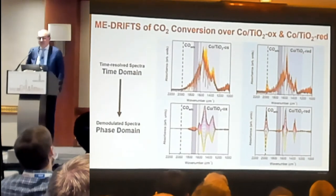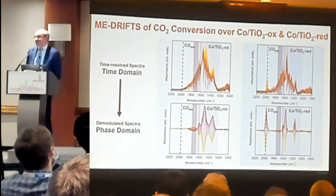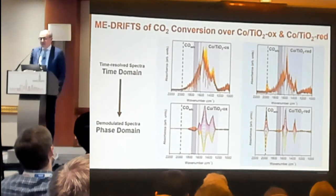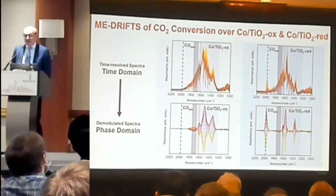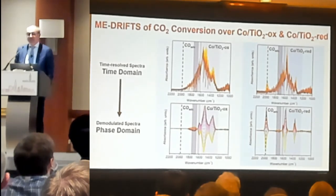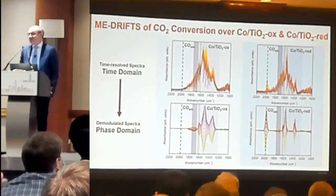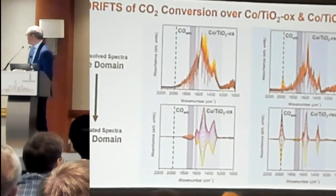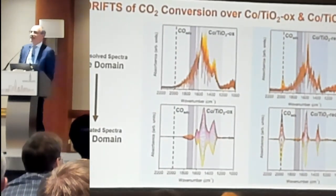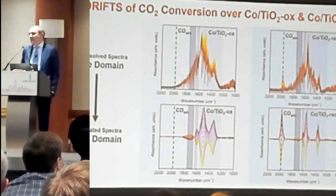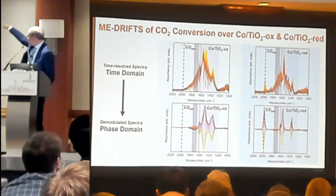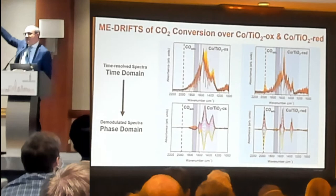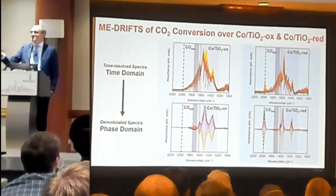Now comes the interesting result — the DRIFTS modulated excitation results. On the left you see the oxidized system, on the right the reduced. On top is the time domain — the time-resolved spectrum. When you do demodulation you can see how it translates to the bottom spectrum. You see it going up and down, going from reddish to yellowish — and that is how the system behaves.